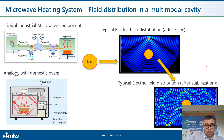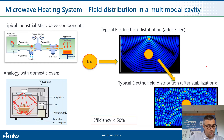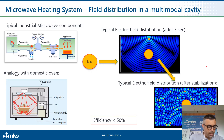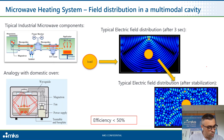The problem in this case is that the overall efficiency from line to the load is usually around 50%. This is often due to the broad variety of loads that we have to heat. So, as a conclusion, a multimodal cavity is not focused on a specific load.